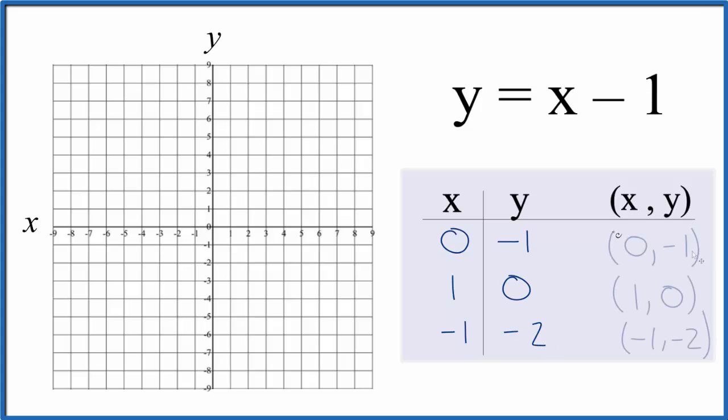So these are the points that we'll graph for this equation. We have x is 0, and then y is negative 1, so we'll put a point here. We have x is 1, but y is 0.